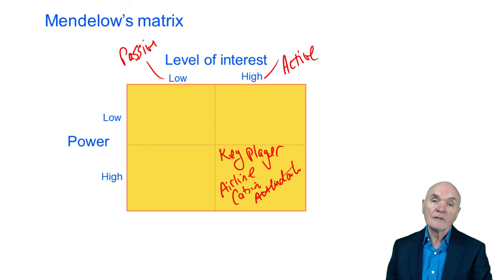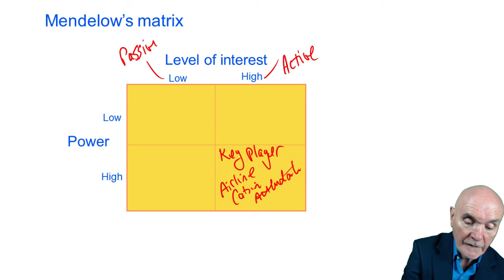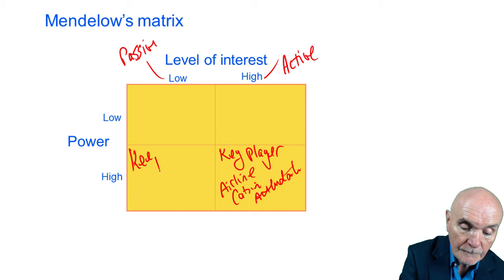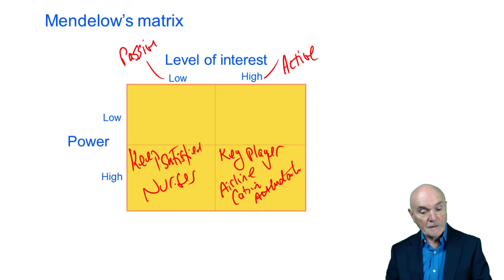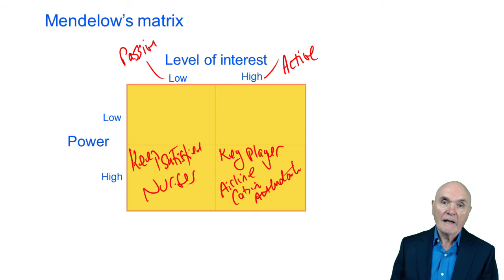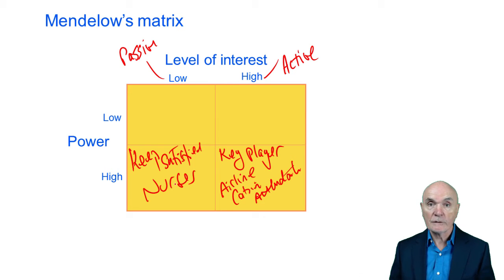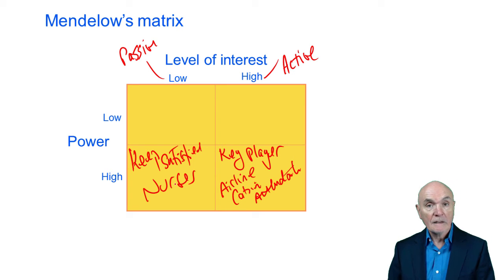Next, we have people with high power but who are relatively passive — relatively reluctant to take action. What you have to do with these people is keep them satisfied. An example would be nurses. In the UK, nurses' ethical and moral standards meant they were very reluctant to go on strike because that would mean patients were suffering. Yet they obviously have high power, because if they did strike the hospital simply couldn't cope.